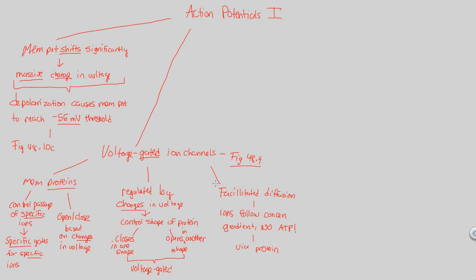Take a look at figure 48.9 to summarize everything just covered. The only way you can have a significant shift in membrane potential — a massive change in voltage, a depolarization — is to utilize the structure and function of voltage-gated ion channels. These are involved in action potentials. The other structures we saw — the sodium-potassium pump and the general ion channel — are involved in maintaining resting potential. That's a totally different thing than producing an action potential, so keep that distinction very clear.